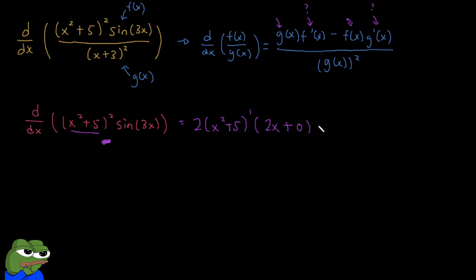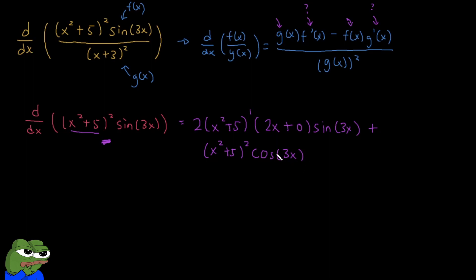Then we simply multiply by a copy-paste of our second function. By product rule, we now add a copy-paste of our first function — (x² + 5)² — and take the derivative of the second function. That gives us cosine(3x), and we chain rule it because there's a 3x inside. We multiply by the derivative of 3x, which is 3. This entire expression is our f'(x).